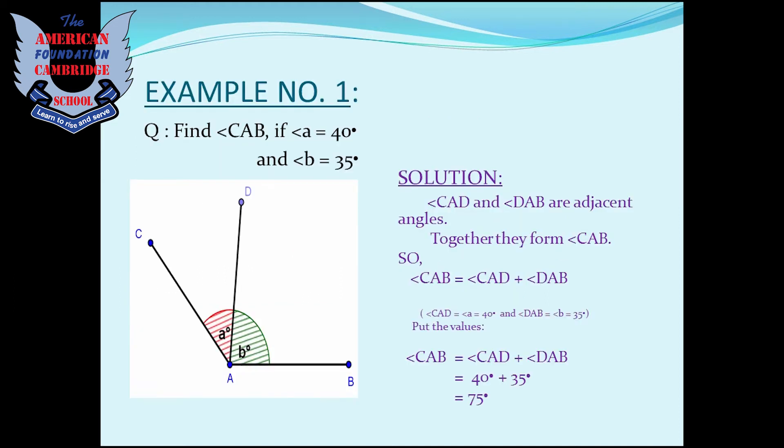Let's solve example number 1. Question is: Find angle CAB if angle A is equal to 40 degrees and angle B is equal to 35 degrees.